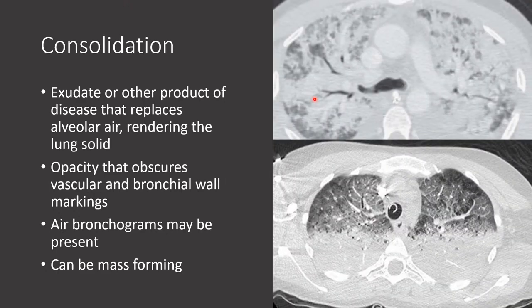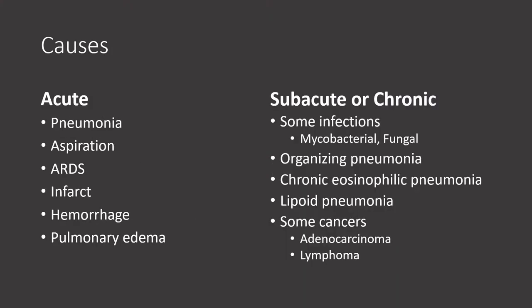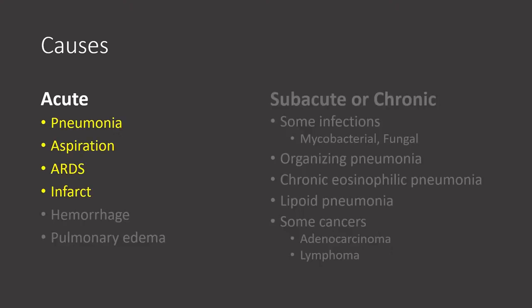Here are two additional examples of widespread consolidation. The top image shows multiple areas of dense opacity within the lung parenchyma. The lower image shows opacities predominantly in the dependent portions of the lung. Both of these patients had acute respiratory distress syndrome (ARDS). Typically when we see consolidation, the findings are often acute, with the most common causes being pneumonia, aspiration, ARDS, or pulmonary infarction in the setting of pulmonary embolism.